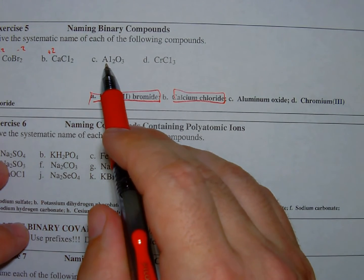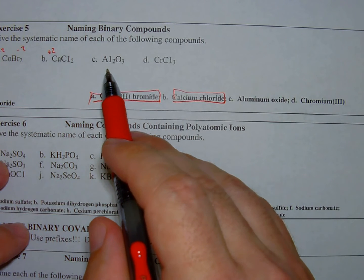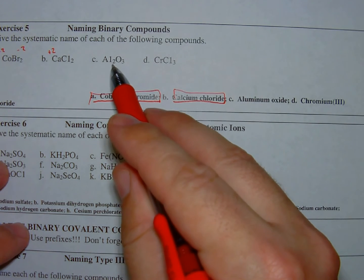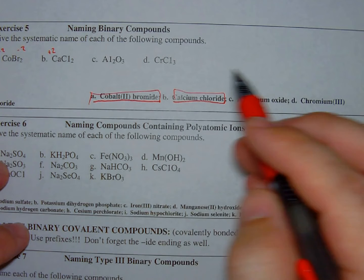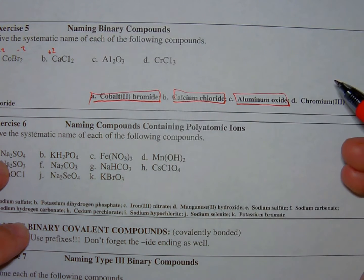C, aluminum. Again, representative element. It's 3A. And so there's going to be no multiple valence states here. It's always going to form plus three. So I don't have to tell you what charge it is. So I simply write aluminum oxide.